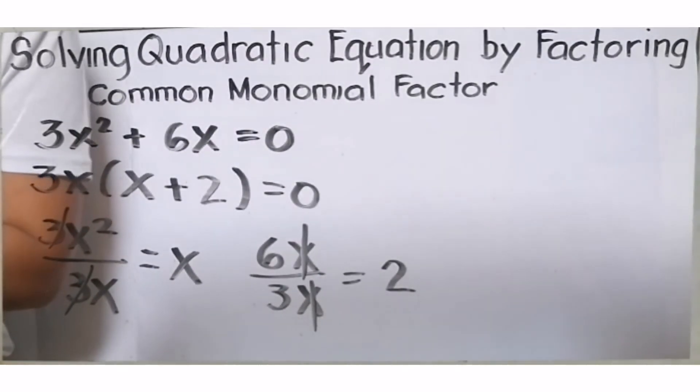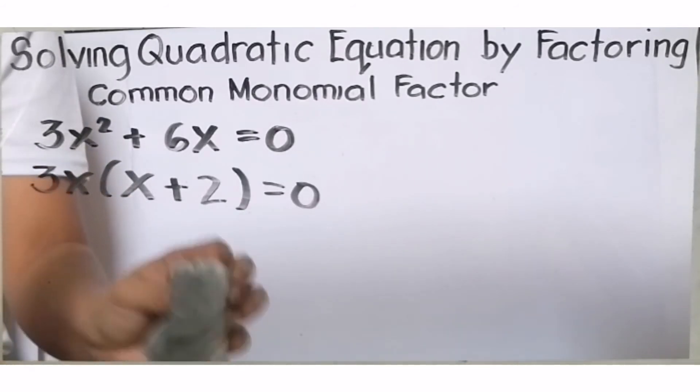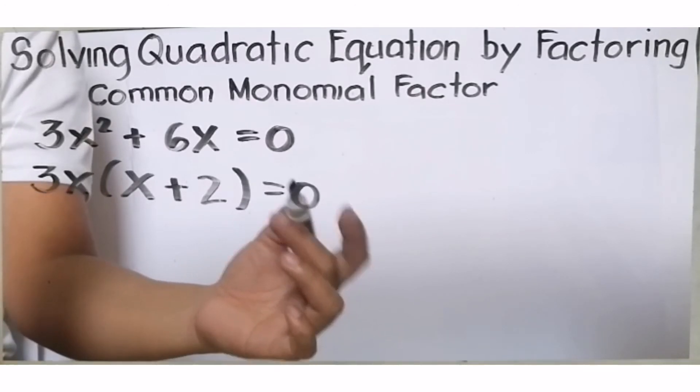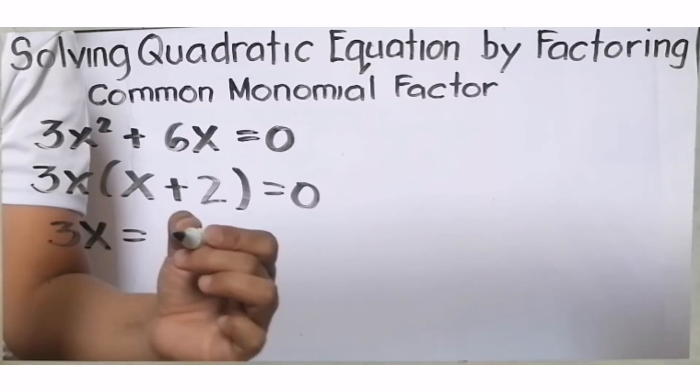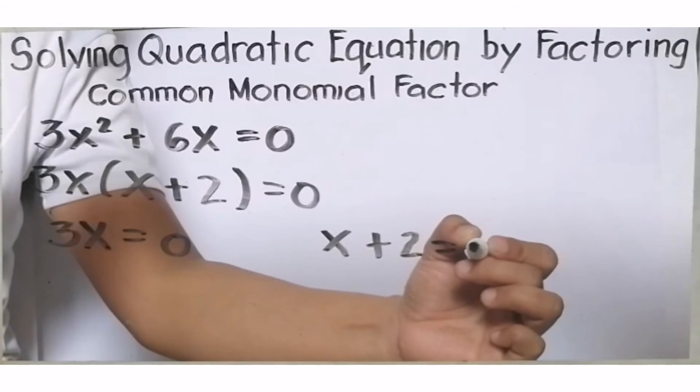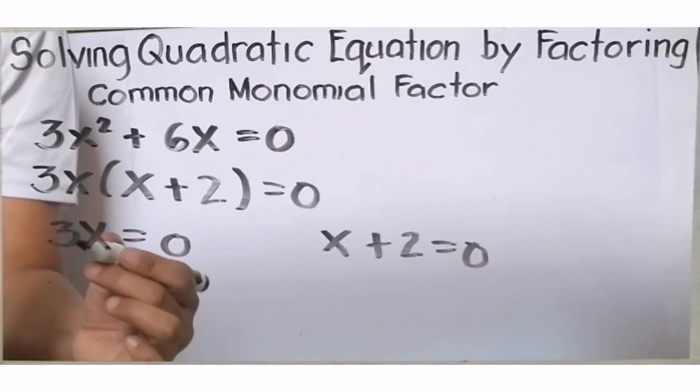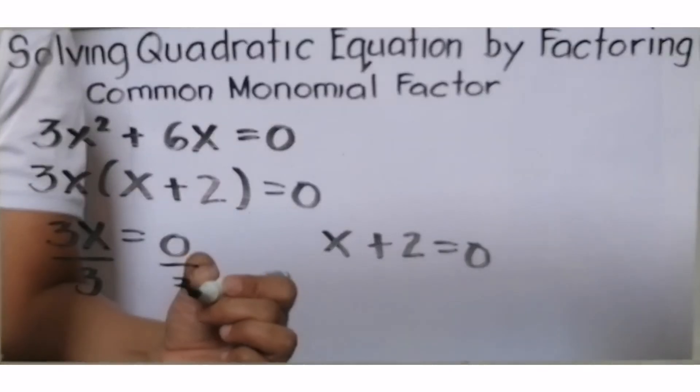Ngayon, lumako na tayo dun sa splitting of factors. Split natin ang 3x at x + 2. And then, let us equate each by 0. Meron tayong 3x = 0 at yung isa ay x + 2 = 0. Ngayon, kailangan x lang ang narito sa left side of the equation para makuha natin yung value of x. 3x, kailangan matanggal si 3. I-divide natin both sides of the equation by 3.